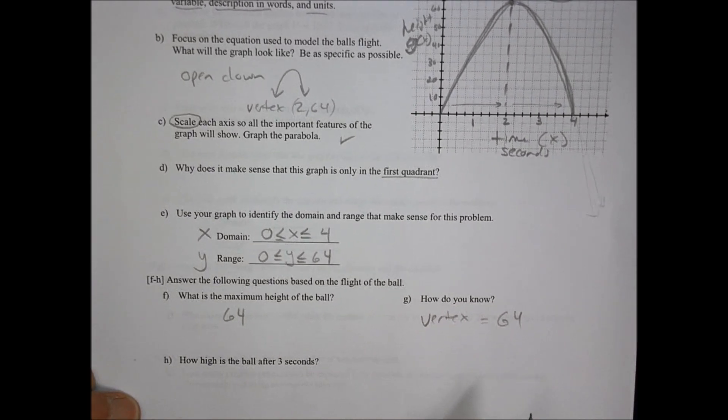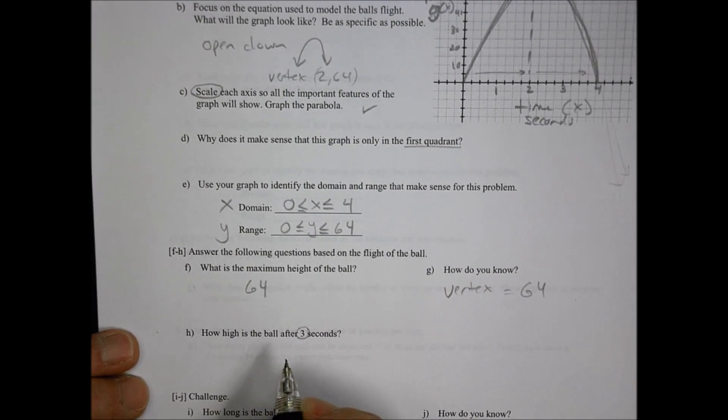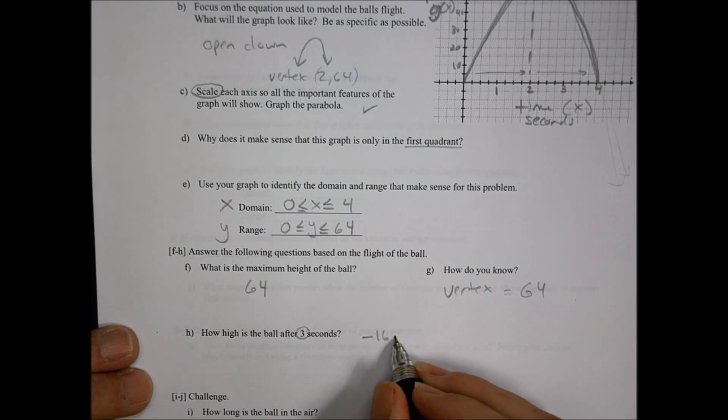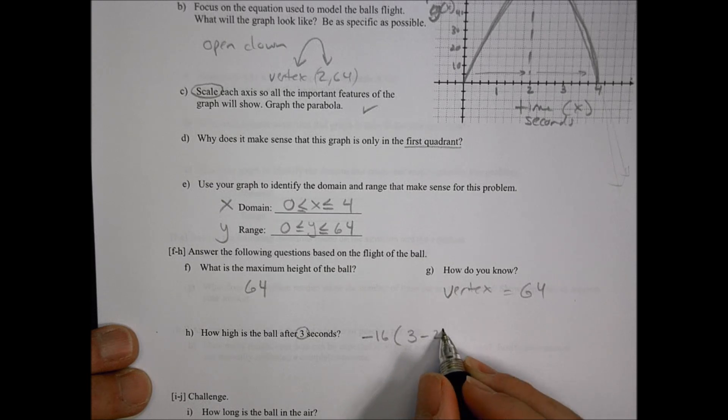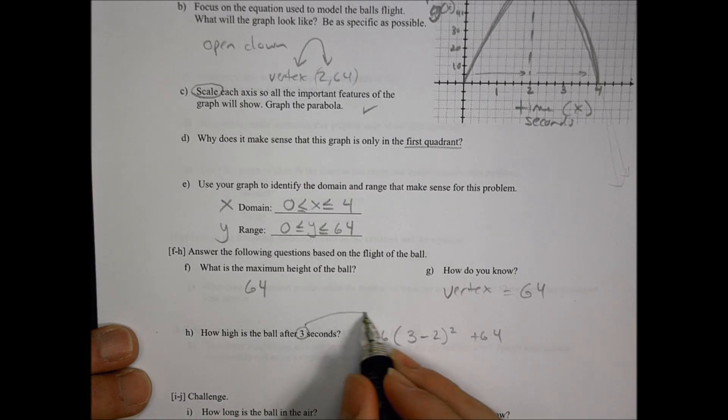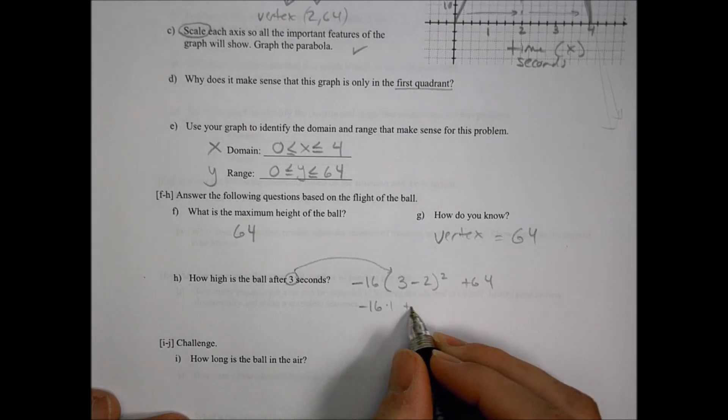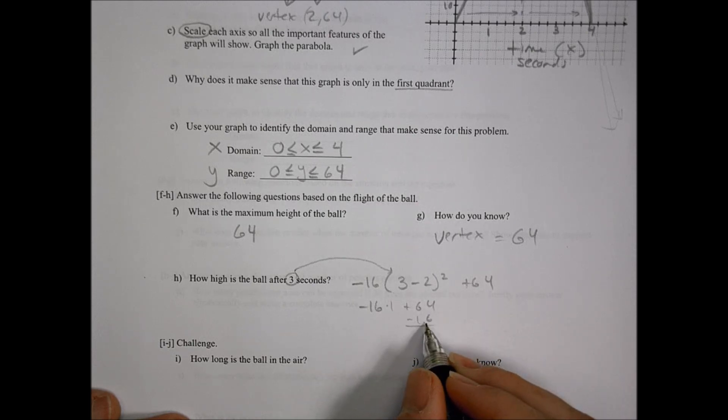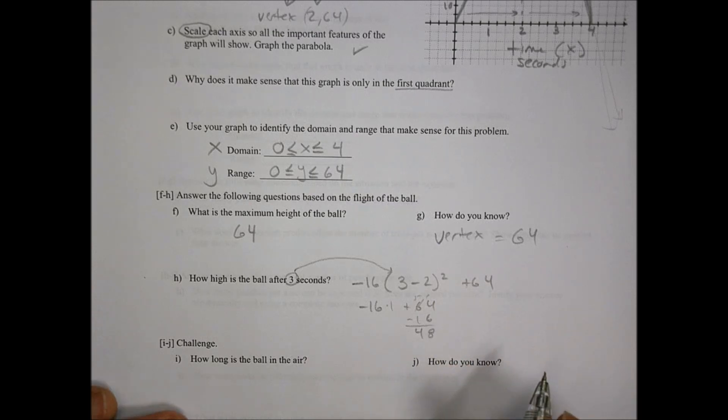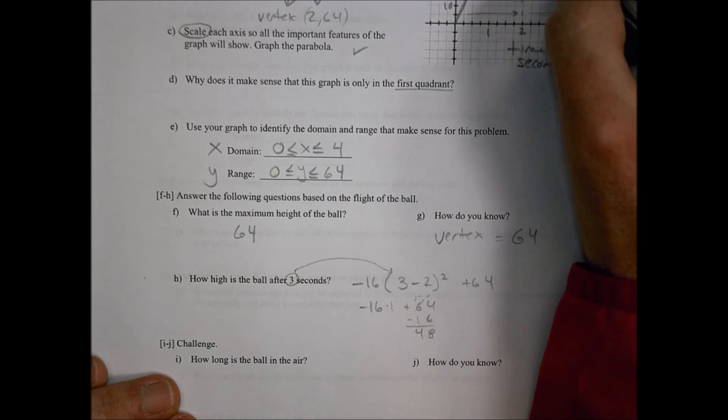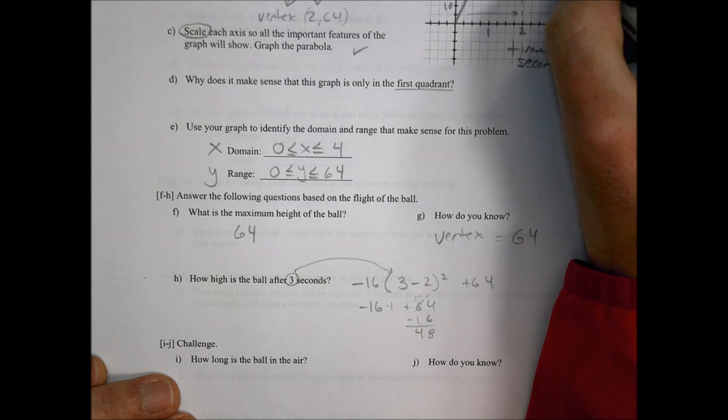How high is the ball after three seconds? We have a number we can use within our equation to figure that out. So we're going to do negative 16 times (3 minus 2) squared plus 64. 3 minus 2 is 1, so we have negative 16 times 1 plus 64, that's still 1. So 64 minus 16 is going to get you 48. We would say it is at 48 feet in three seconds.